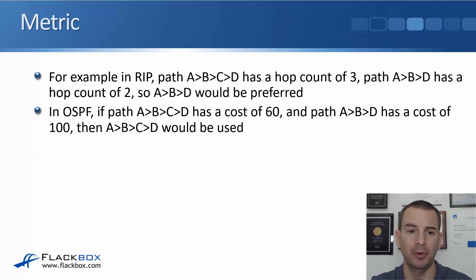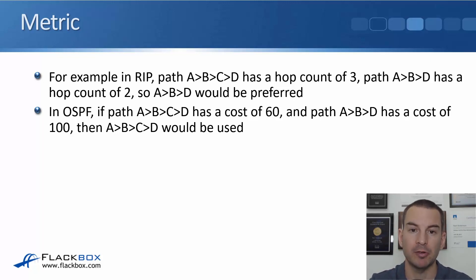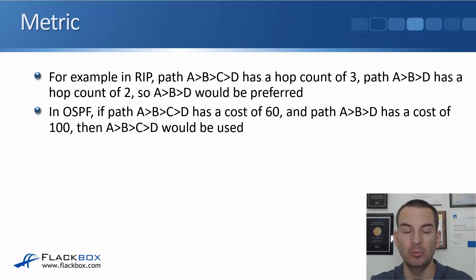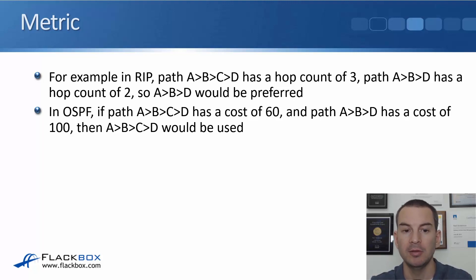For example, let's say we're using RIP as our routing protocol and we want to get to a particular destination, and we've got two different paths to get there. The first path goes from router A to B to C to D, which would be a hop count of three. The other path is A to B to D, which would have a hop count of two. RIP uses hop count as its metric, so it's going to put the shortest hop count into the routing table. In this example, A-B-D would be preferred.